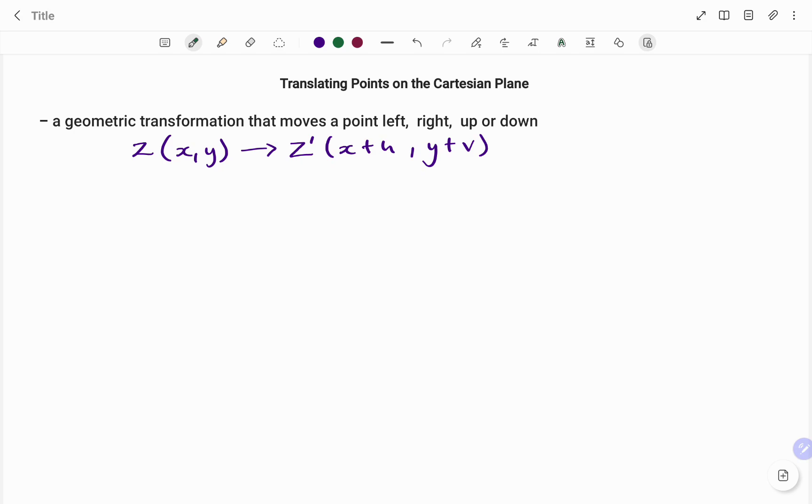Translation is a geometric transformation that moves a point left, right, up or down. For example, if I have the point z with coordinates x, y, translated to x plus h, y plus v.